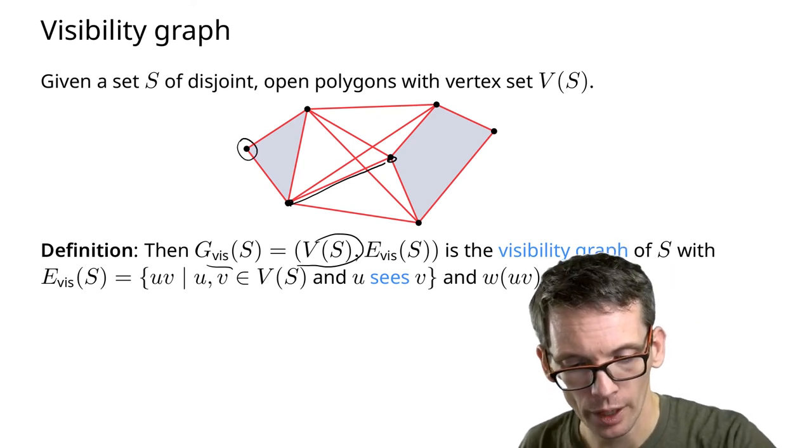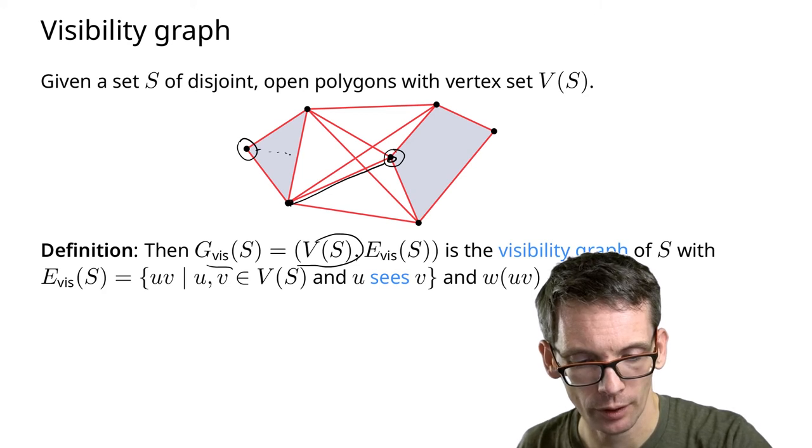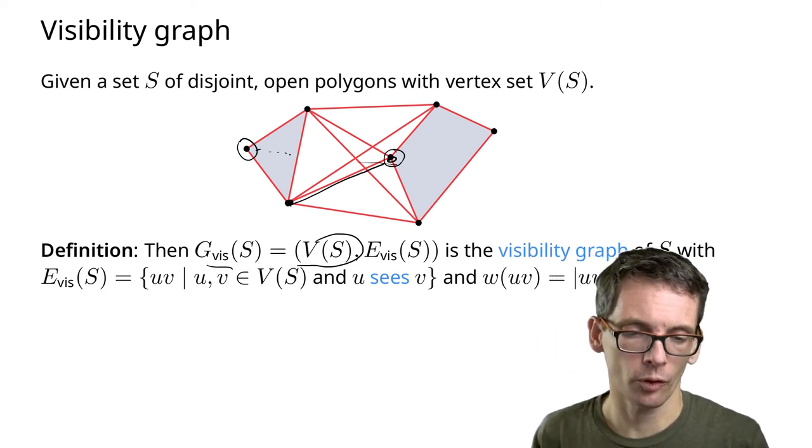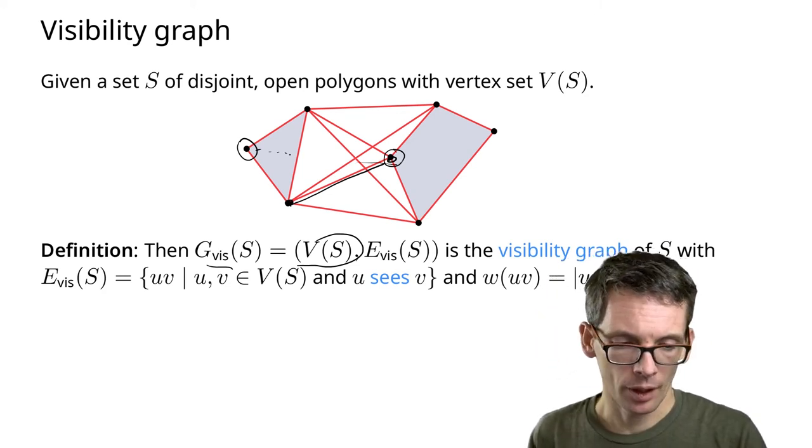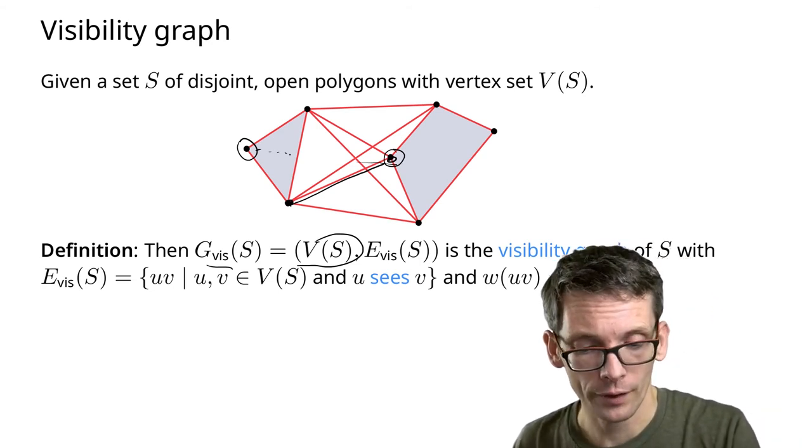For instance, there's no edge from here to that one, because here I'm first intersecting that polygon before I can actually reach. This is a weighted graph, and the weight of an edge is simply the length of the line segment.